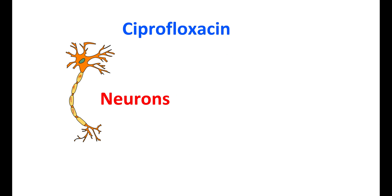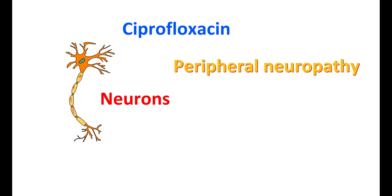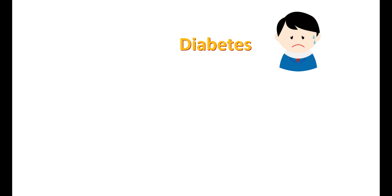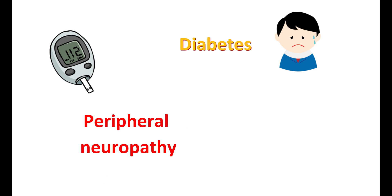Ciprofloxacin can affect the neurons and produce a condition called peripheral neuropathy. It is a neuronal disorder that produces abnormal sensations due to damage to the neurons. It can produce burning sensation, tingling sensation, numbness, and stinging sensation, and can also produce loss of sensation at the affected neuronal group. This peripheral neuropathy may be more pronounced in people with diabetes, since elevated glucose levels can also induce peripheral neuropathy. In people with diabetes, use of ciprofloxacin may increase the risk, and this neuropathy is irreversible in nature. If you develop abnormal sensations like tingling and stinging, it may indicate development of neuropathy and caution should be taken while using ciprofloxacin.